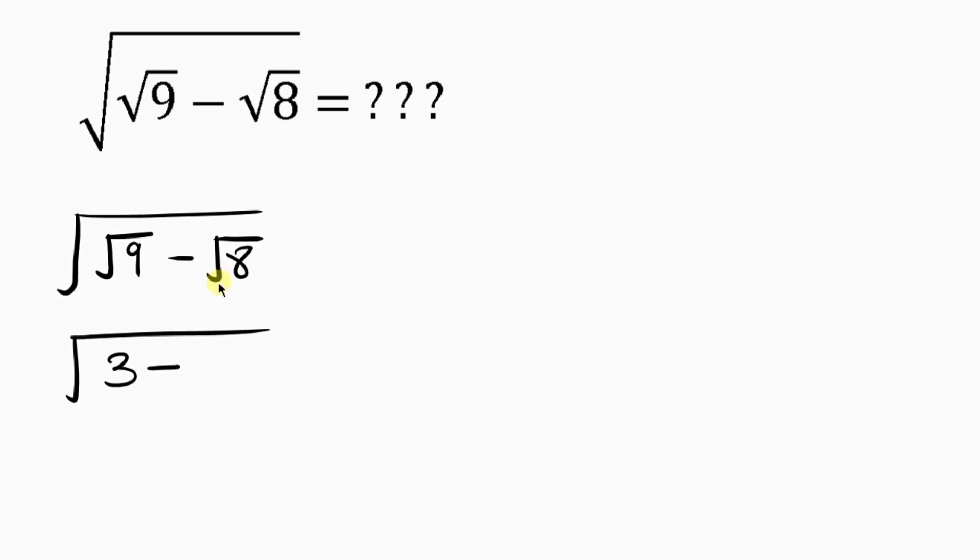So this can further be simplified as square root of 9 is going to give you 3 minus, what about the square root of 8? Well, 8 is not a perfect square, so I can split 8 or simplify 8 to be a perfect square times 2. You know, 4 is a perfect square, and 4 times 2 is going to give you 8, right? Very good.